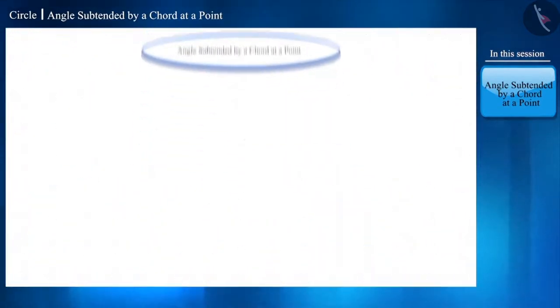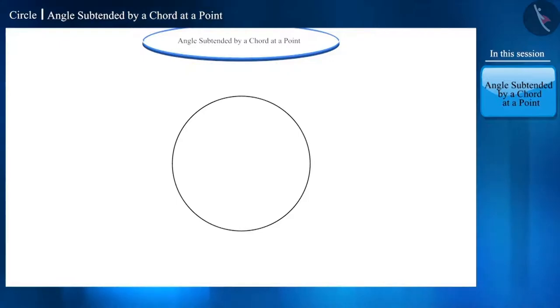Friends, on a circle whose center is O, if you take two different points A and B and join them, then the line segment AB thus formed is called a chord of the circle, where AB is its minor arc and this is the major arc.